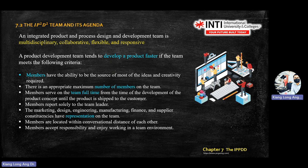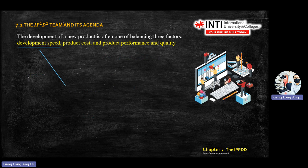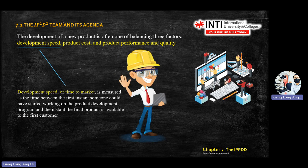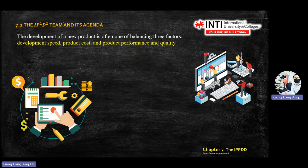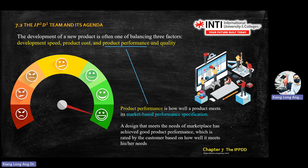For the IPPD team requirements, team members are all full-time and are experts in their particular department. In developing new products, you focus on three factors: development speed, cost, and performance. Development speed is the time to market — from idea until the product reaches the customer. Production cost is straightforward, and performance reflects what the customer thinks about the product.